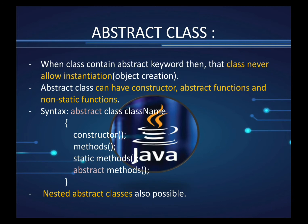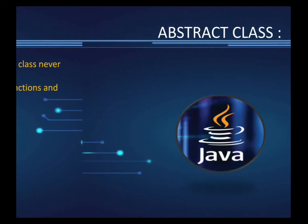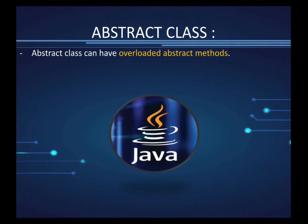A nested abstract class can be written inside the scope of the abstract class. An abstract class can also have overloaded abstract methods — that is, the function name is the same but the parameters are different.